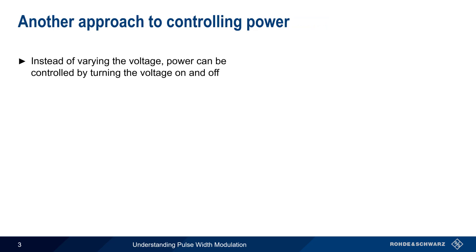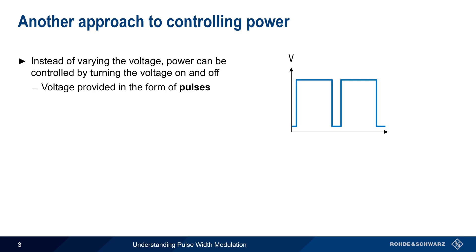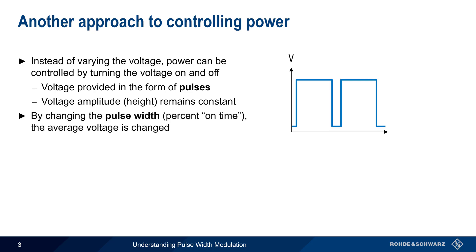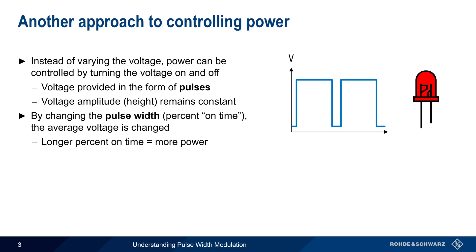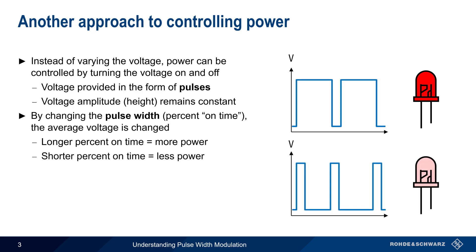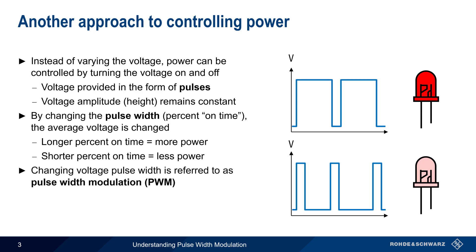Instead of varying the voltage, we could instead control power by turning the voltage on and off — that is, by providing voltage in the form of pulses. Unlike the previous example in which the voltage was raised or lowered, here the amplitude or height of this pulsed voltage remains constant. We can change the average voltage by changing the width of these pulses, or the percentage of time the voltage is on. Longer on time means more power delivered, and shorter on time means less power delivered. This process of changing the width of a pulsed voltage is referred to as pulse width modulation.